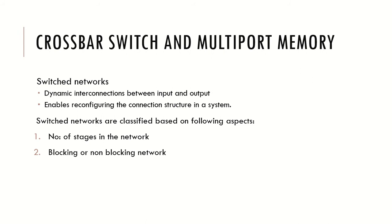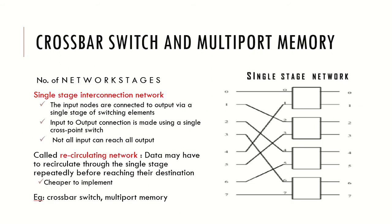The crossbar network is a perfect example of a single-stage network, also known as a recirculating network because the data may have to recirculate through the single stage multiple times to finally reach the desired output. One problem with single-stage networks is that not all inputs can lead to all outputs. To rectify this, crossbar switches were introduced, but crossbar switches are not highly scalable, which led to the idea of multi-stage networks.